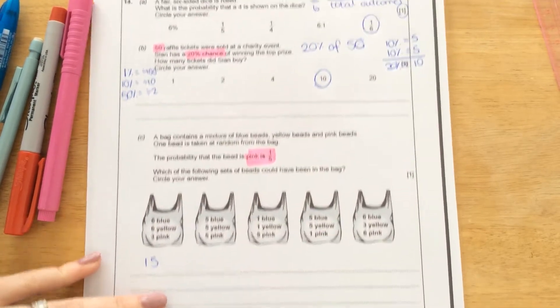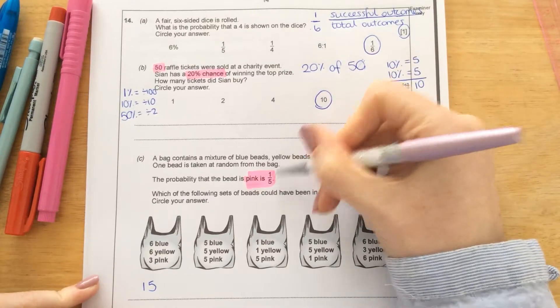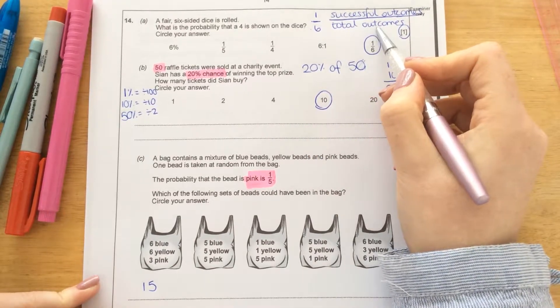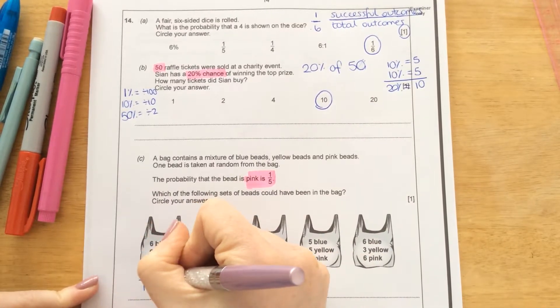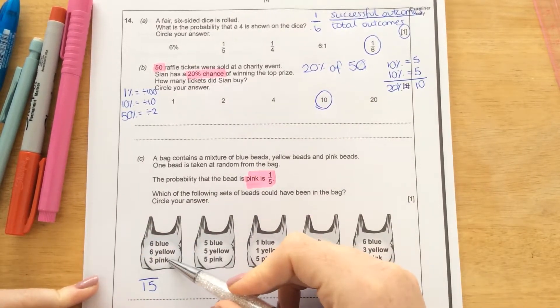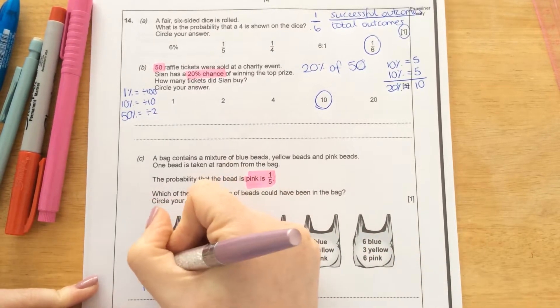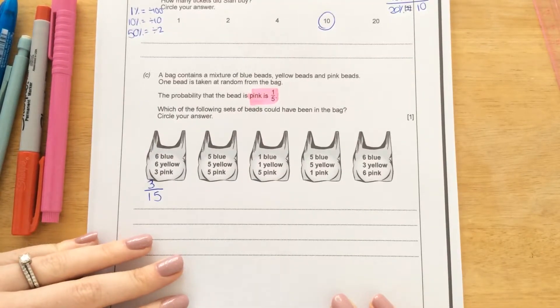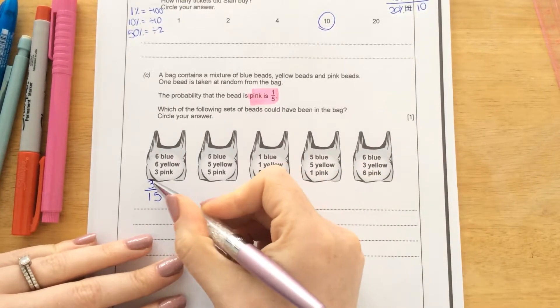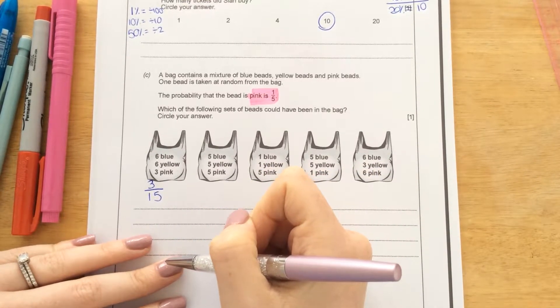So again, if we're writing this as probability, we've got a fraction here. The fraction would be the total outcomes on the bottom and the successful on the top. So the 15 is the total. Now the successful ones are how many pink there are. So there are 3 pink beads in this sack.